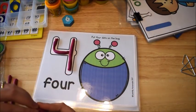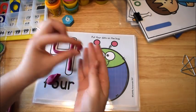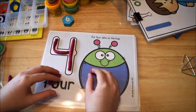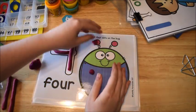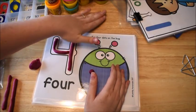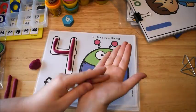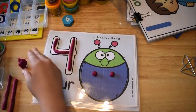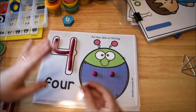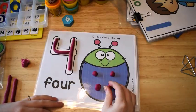So first they make the number, and then it says, and here it has the number word for them as well. So they're recognizing the word with the representation of the number here. And then they're going to put four dots on the book. So now they are doing the quantity of the number.